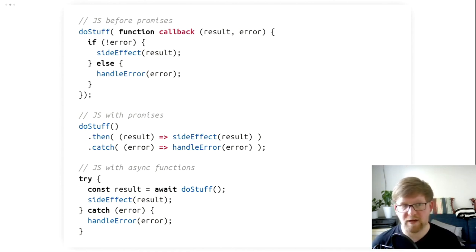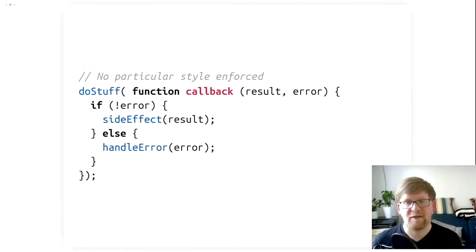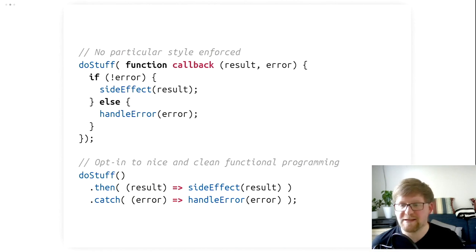And even promises are out today because we have async functions. We have this await keyword that we can use in async functions to basically get rid of functions altogether. There's no callback involved and there's no promises anymore. It just looks like regular code like imperative code. So we had callbacks back in the olden days, then came promises, then came async functions. These are just features. But what do they do to our thinking? How do they influence the way we write code?